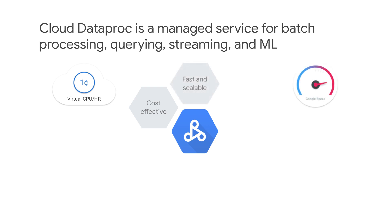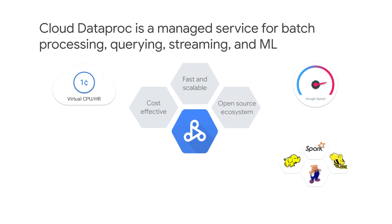Cloud Dataproc clusters are quick to start, to scale, and to shut down, with each of these operations taking 90 seconds or less on average. Clusters can be created and scaled quickly with a variety of virtual machine sizes, types, number of nodes, and networking options. You can use Spark and Hadoop tools, libraries, and documentation with Cloud Dataproc.